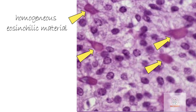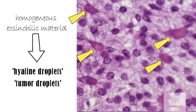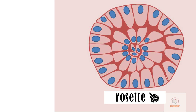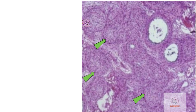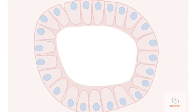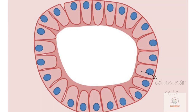These cells are arranged in various patterns. Most commonly they are arranged in the form of solid nodules. In higher magnification, areas of homogeneous eosinophilic material known as hyaline droplets or tumor droplets are seen between these cells. Tumor cells are also frequently arranged in rosette pattern and whorls. The most distinctive pattern of arrangement is the duct-like structures.